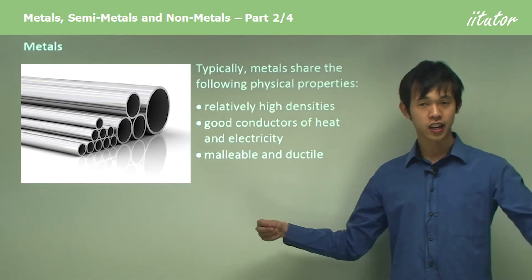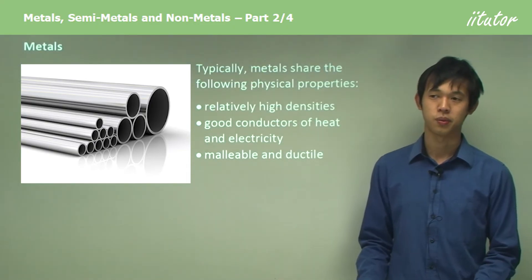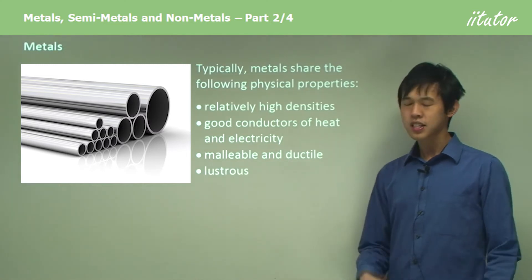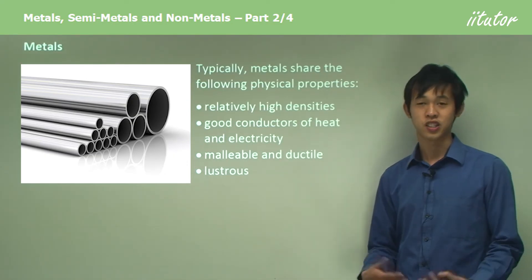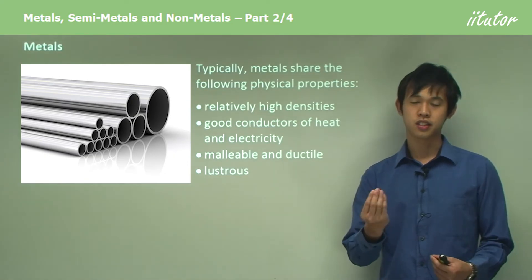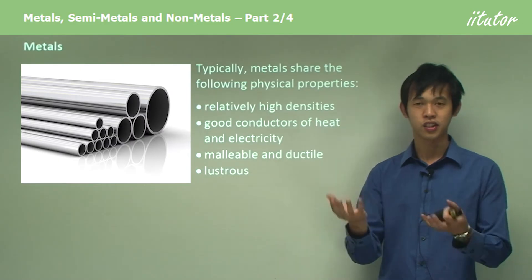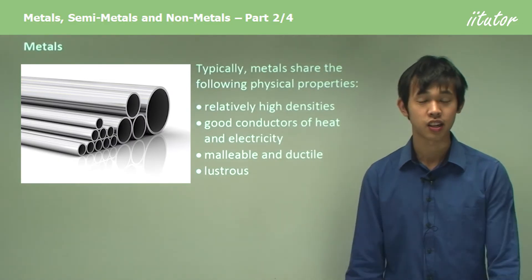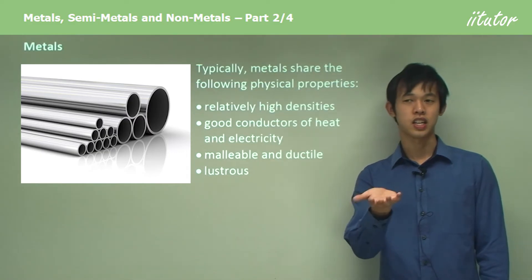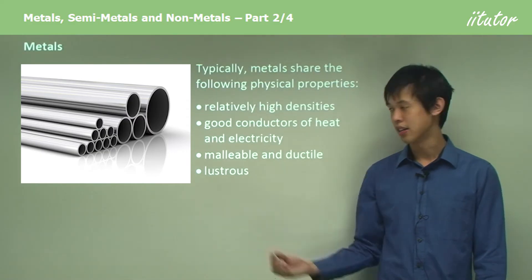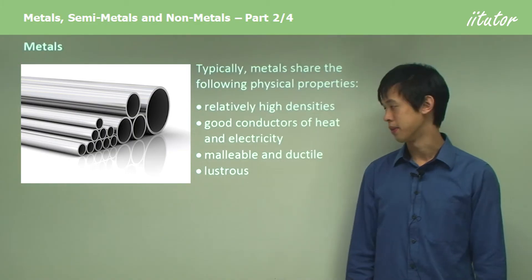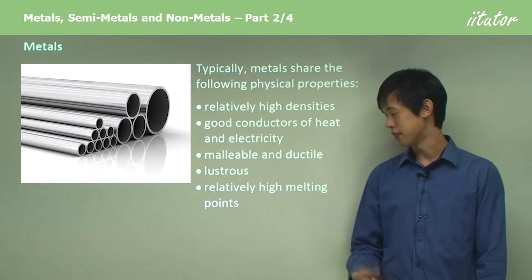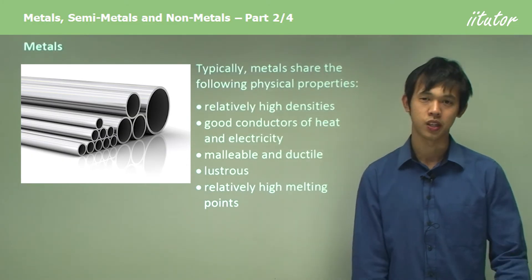We can draw metal out into a wire, which is what we do when building wires for electrical purposes. Probably the first thing you'd describe is that they're shiny — they're lustrous. When you hold a piece of metal it's usually shiny and quite nice-looking. Metals also have relatively high melting and boiling points, so it's hard to melt them and equally hard to boil them.